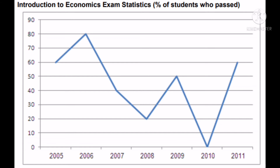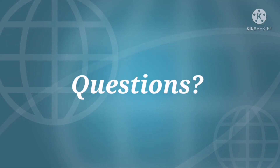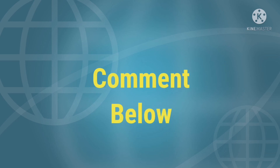Now let's see if you've learned something. Aside from 2008, which other year has more than two-thirds of students fail the test? If your answer is 2010, you are correct. In 2010, there was 0% passing, meaning 100% of takers failed. If you have other questions, post them in the comments. Stay tuned for more problems. Thank you and goodbye.